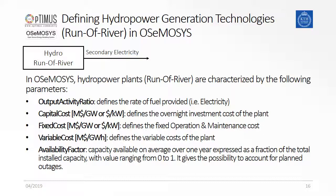These are related by setting the output activity ratio in the technology hydro runoff river to one for the fuel secondary electricity. The technology is then defined by inserting data for the parameters listed on this and the next slide. I will now go over them and comment them.